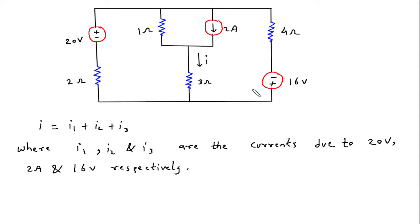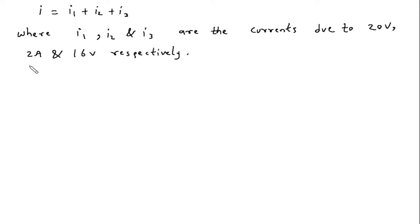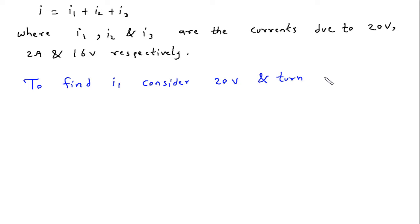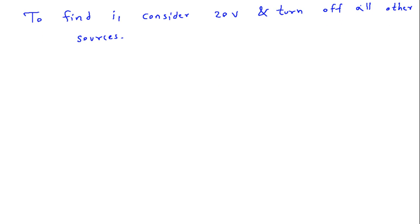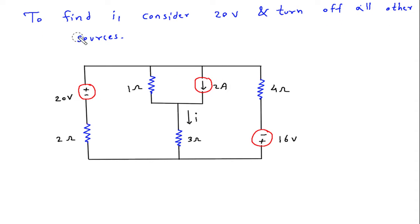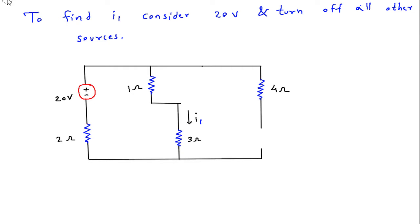Now to find I1, we will consider the 20V voltage source and turn off all other sources. This I will be I1. The current source will be turned off and open circuited. This voltage source will be turned off and short circuited.